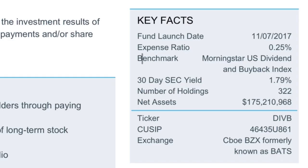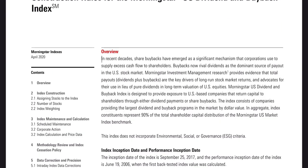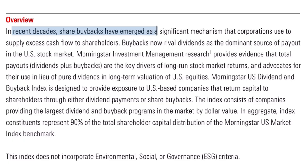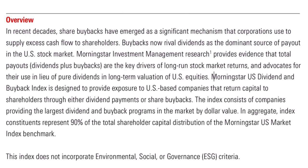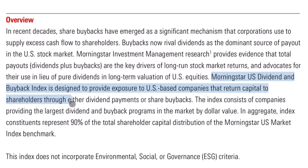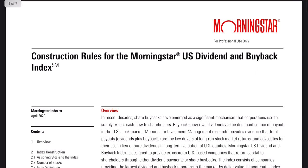The final thing to check out is the actual benchmark this ETF follows — the Morningstar US Dividend and Buyback Index. In recent decades, share buybacks have emerged as a significant mechanism that corporations use to supply excess cash flow to shareholders. Buybacks now rival dividends as the primary source of payout in the US stock market. Morningstar Investment Management Research provides evidence that total payouts — dividends plus buybacks — are the key drivers of long-run stock market returns. The index is designed to provide exposure to US-based companies that return capital to shareholders through either dividend payments or share buybacks, consisting of companies providing the largest dividend and buyback programs in the market by dollar value.